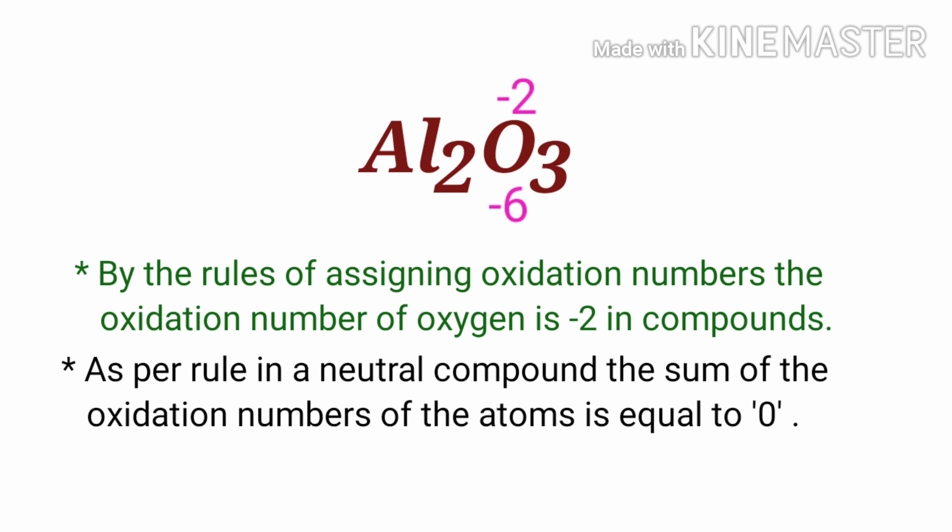So the numbers along the bottom must add up to 0. So the number under Al2 must be plus 6.